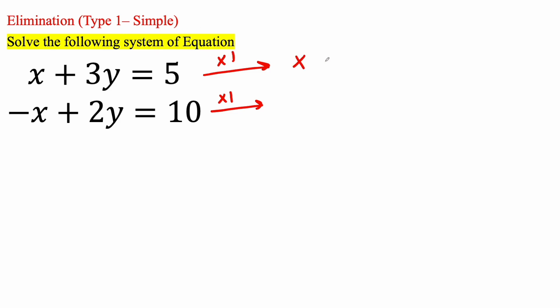And so we're going to get the exact same thing. x plus 3y is equal to 5, and then this equation is going to be the same thing. And we're about to see why this is called the elimination method.